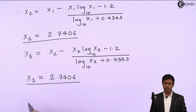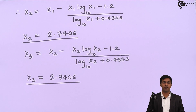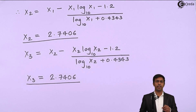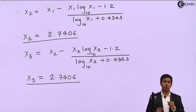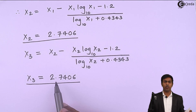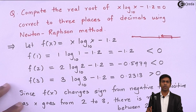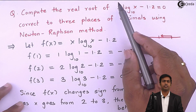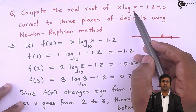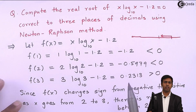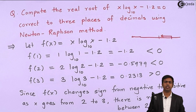The root of the given equation is 2.7406. If you want to verify whether your root is right, you can take this value of x, resubstitute it in the equation, and you will find that the value of the function is 0. If you get 0, then your root is correct. Thank you.